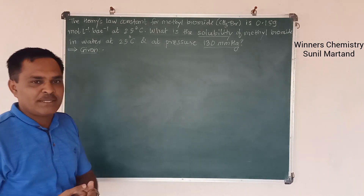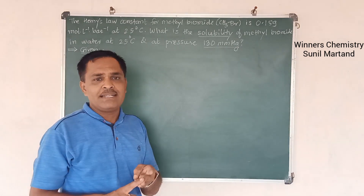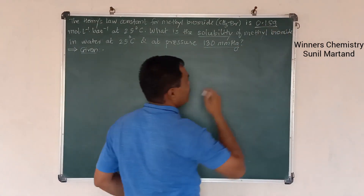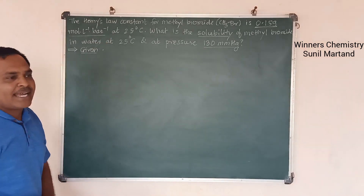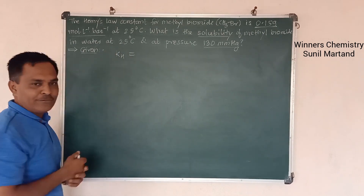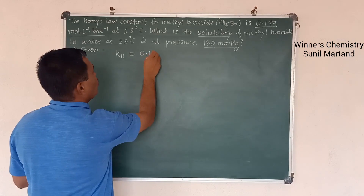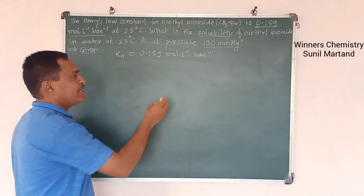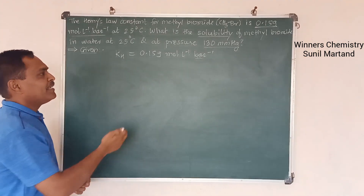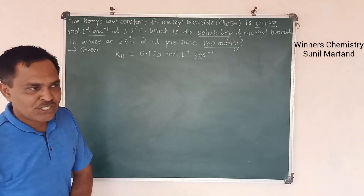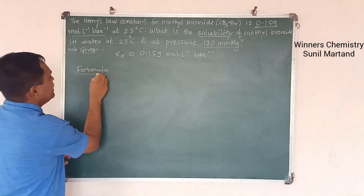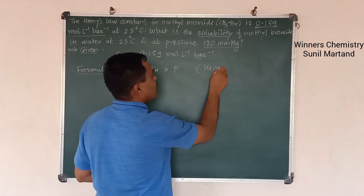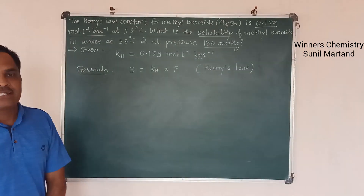We are going to solve the problem in three stages: given, formula, and solution. The only given value is the Henry's law constant KH = 0.159 moles per litre per bar. The formula for calculation is: solubility S is equal to KH multiplied by P, which is the Henry's law mathematical expression.